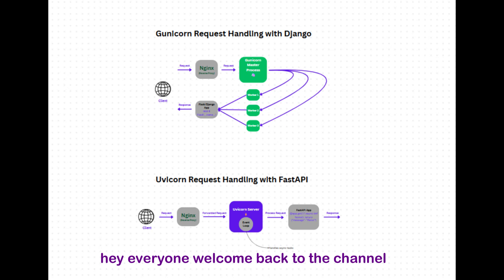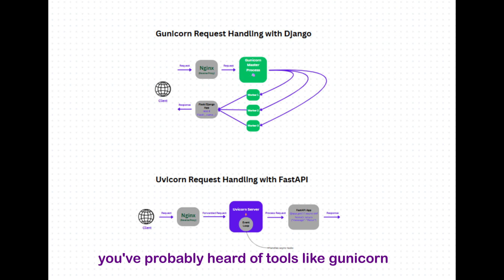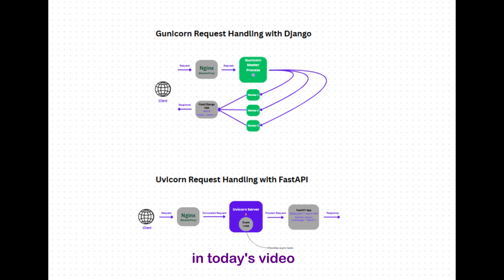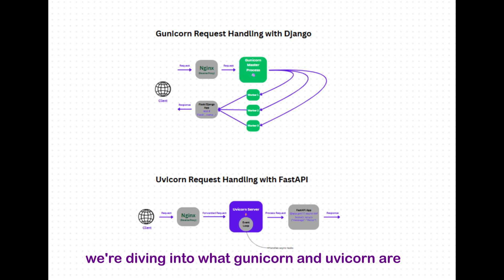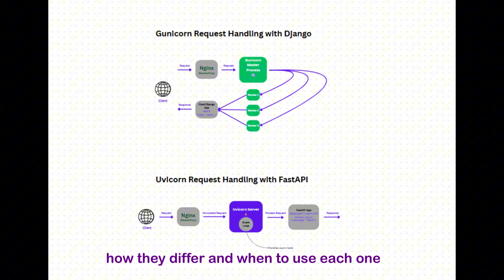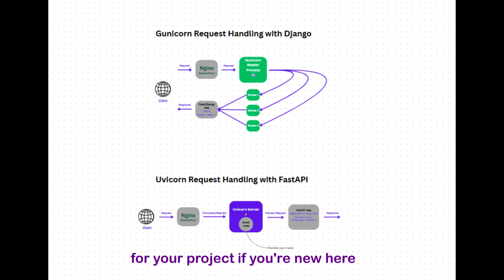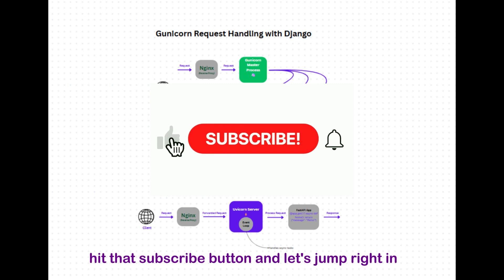Hey everyone, welcome back to the channel. If you're into Python web development, you've probably heard of tools like Gunicorn and Uvicorn. These are super popular web servers for running Python apps, but they serve different purposes. In today's video, we're diving into what Gunicorn and Uvicorn are, how they differ, and when to use each one. Whether you're building with Flask, Django, or FastAPI, this video will help you pick the right server for your project. If you're new here, hit that subscribe button and let's jump right in.